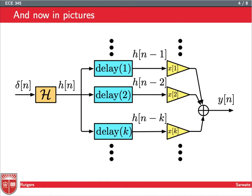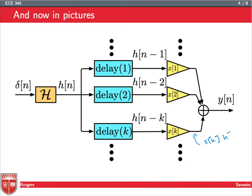We take the impulse response, delay it by different amounts — 1, 2, 3, up to k — so we get h of n minus 1, h of n minus 2, h of n minus k. Then we apply the gains x1, x2, xk to get y of n. So the terms are: x1 times h of n minus 1, x2 times h of n minus 2, and xk times h of n minus k. The output y is therefore the summation from k equals minus infinity to infinity of x of k times h of n minus k. This is the convolution.